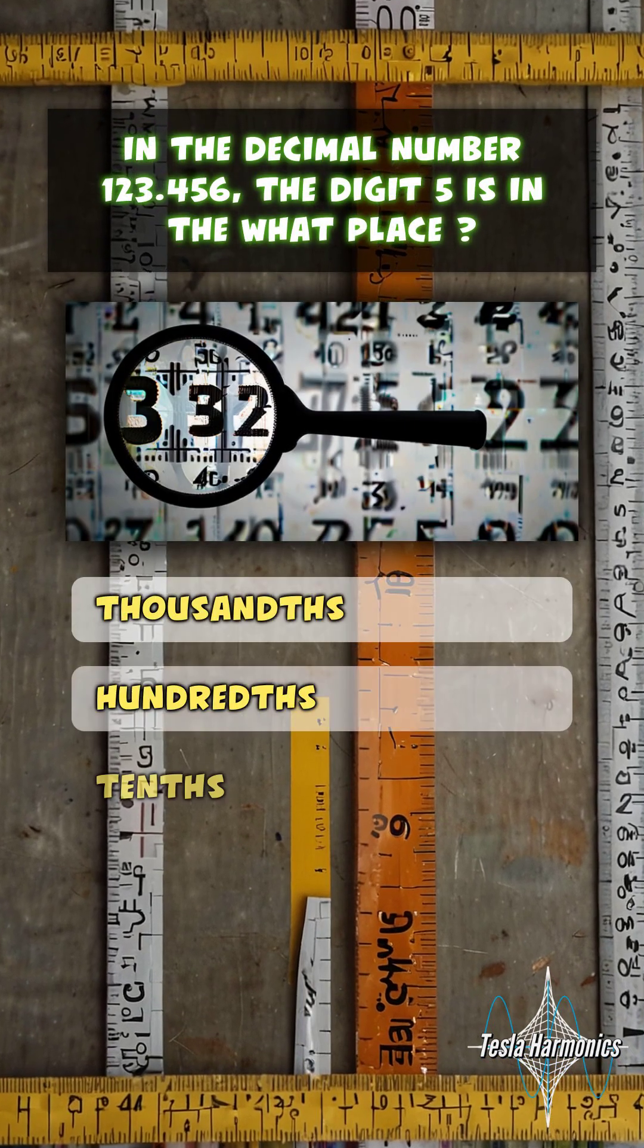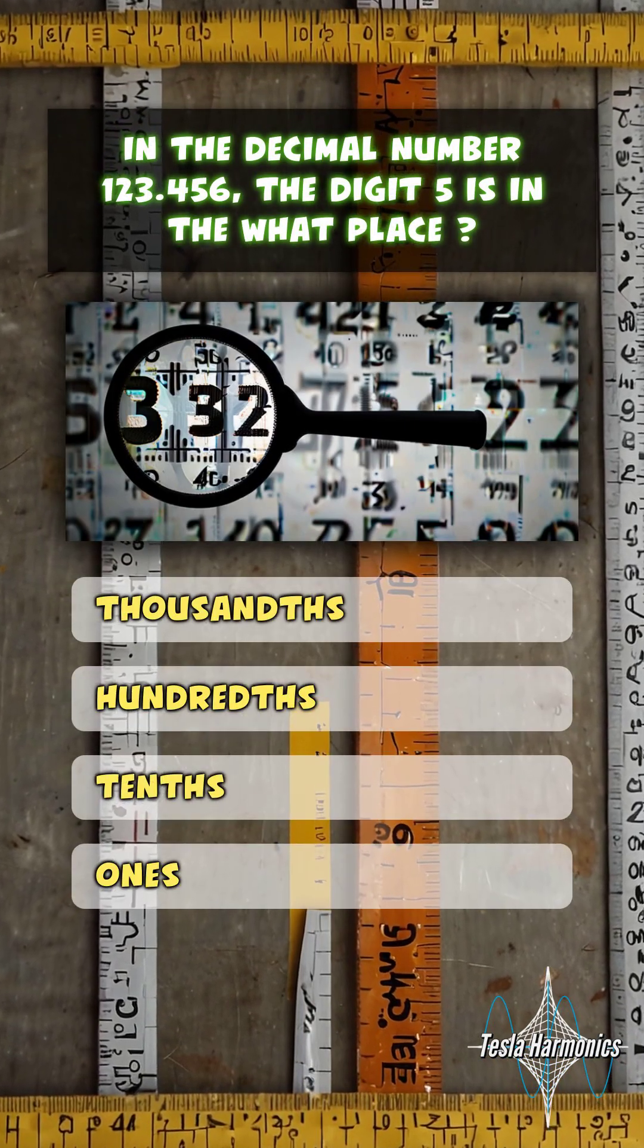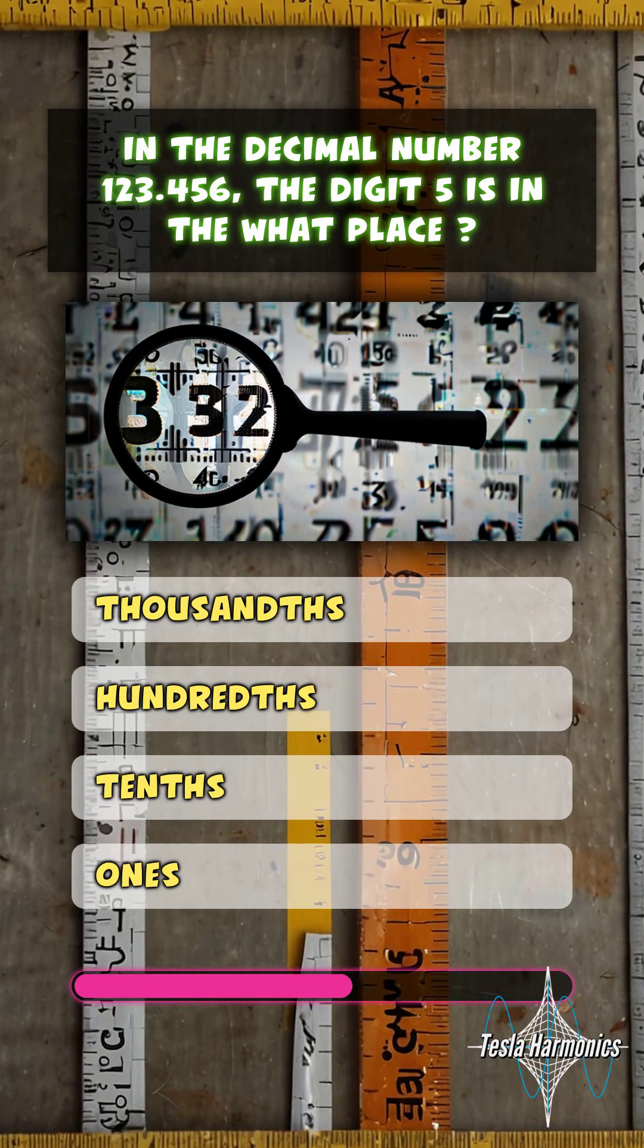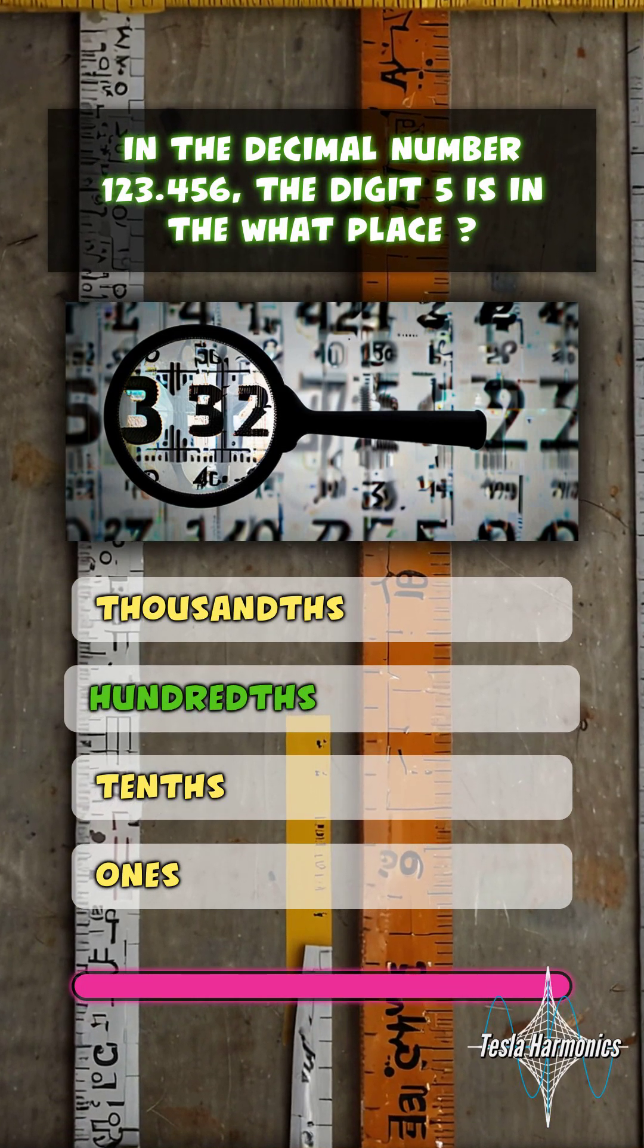In the decimal number 123.456, the digit 5 is in the what place? Hundredths.